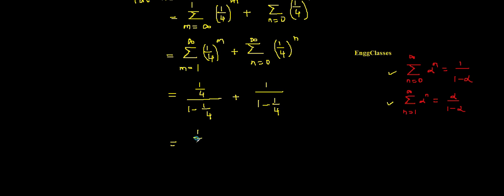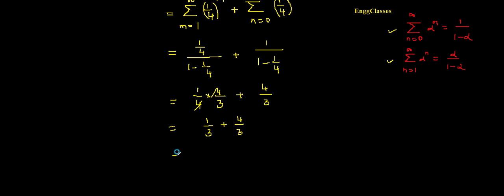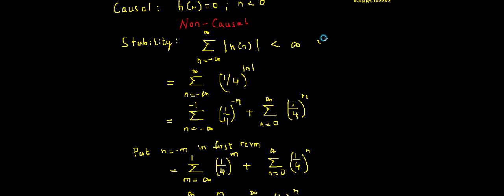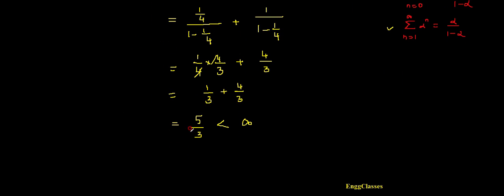Simplifying: (1/4) divided by (3/4) equals 1/3, and 1 divided by (3/4) equals 4/3. Adding these together: 1/3 plus 4/3 equals 5/3. Since 5/3 is less than infinity, the condition for absolute summability is satisfied, and therefore the given system is stable.